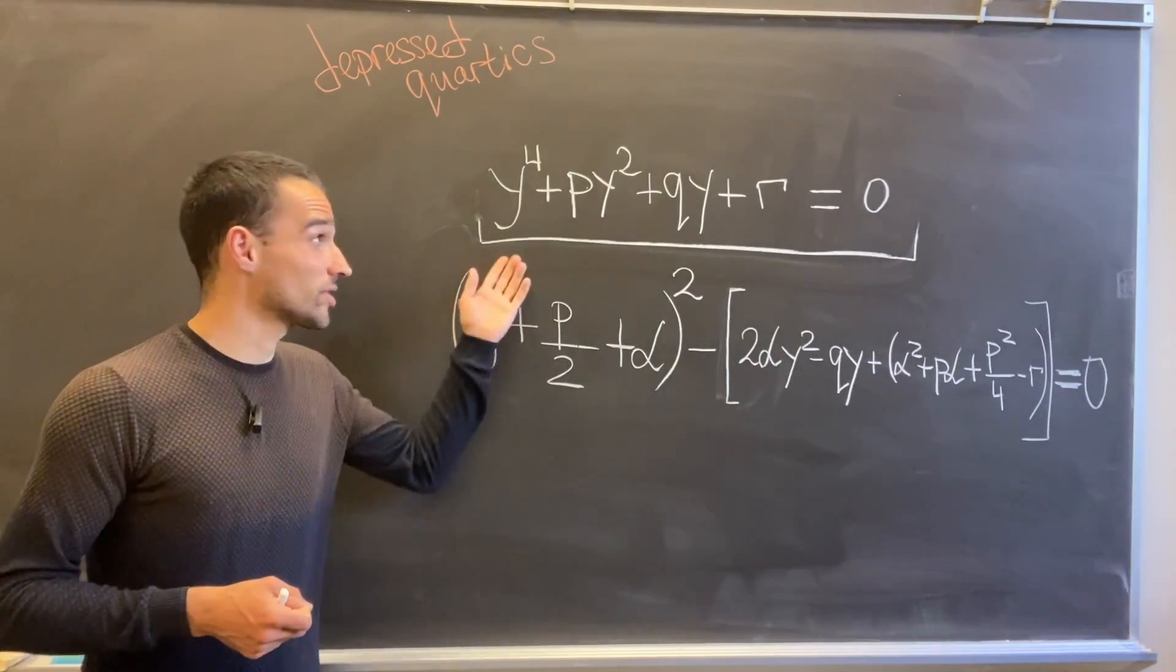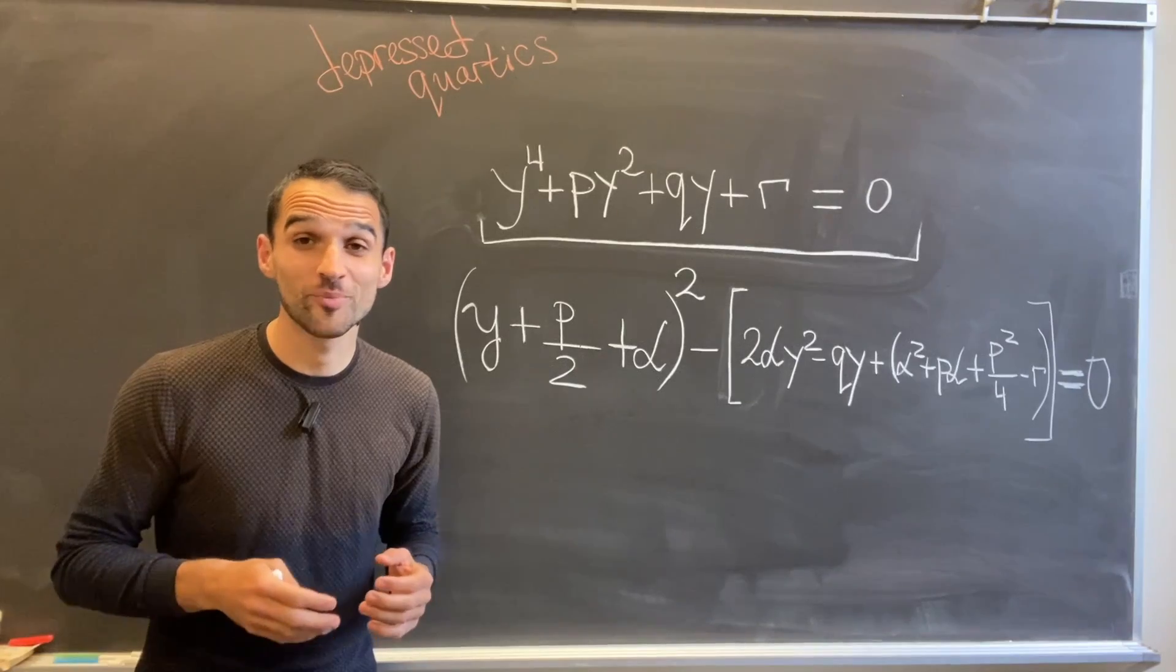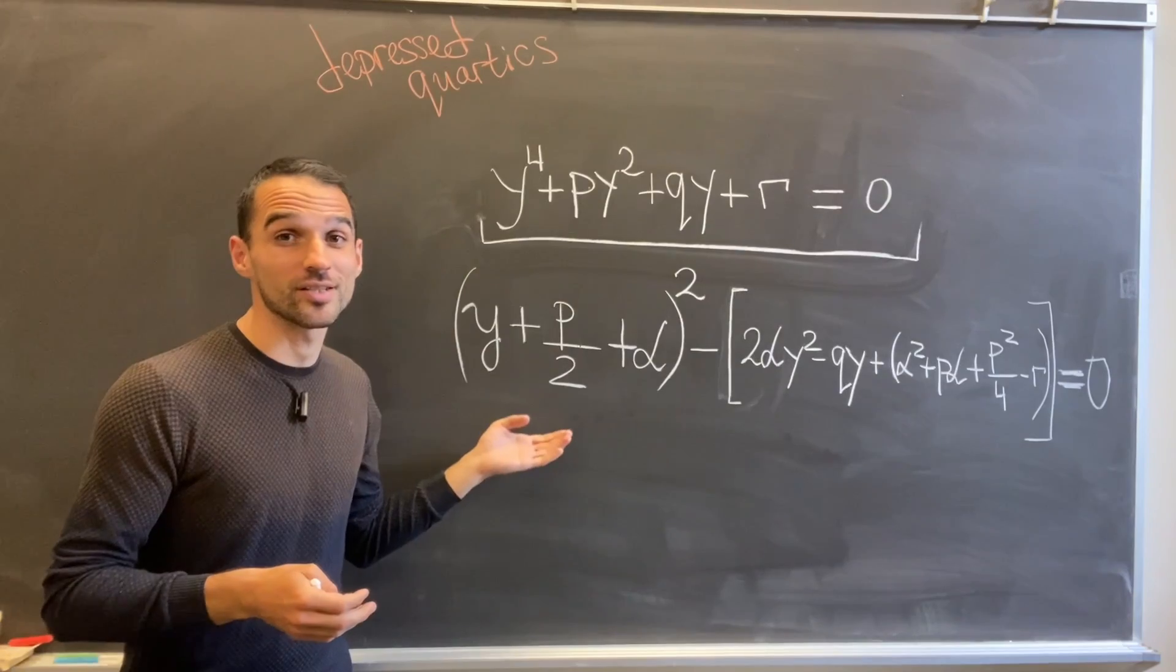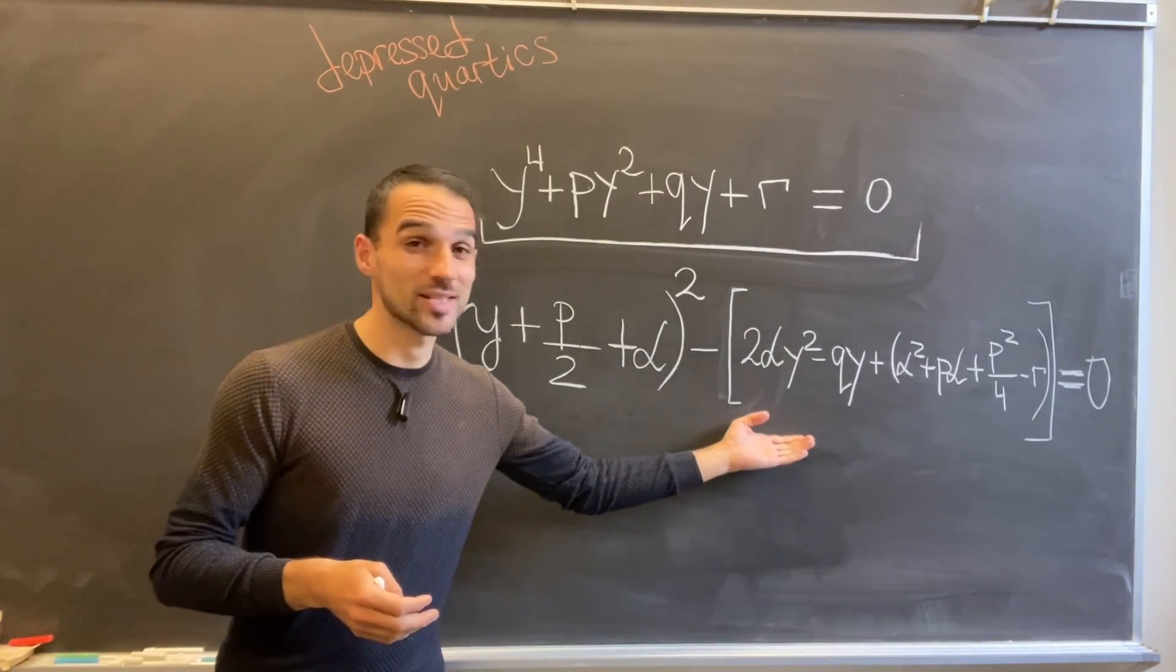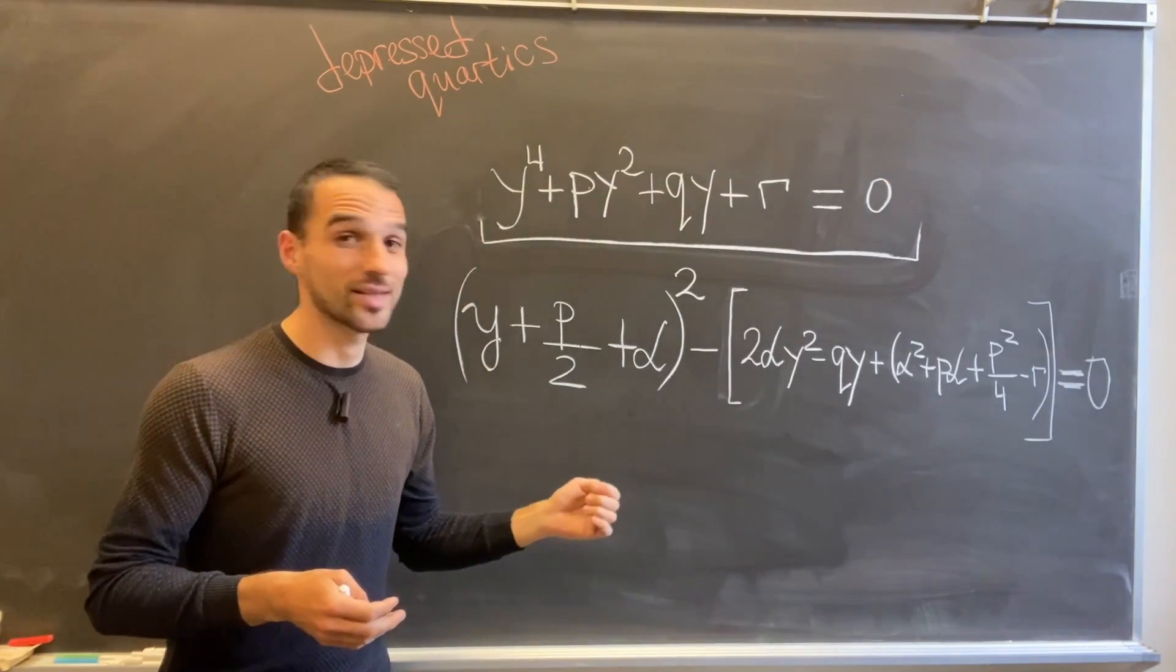So there we go—we just need to solve this depressed quartic now. We need to do something more clever here. We introduce this new variable α and write our equation in this form. So our goal is to pick α so that this expression over here is a perfect square.